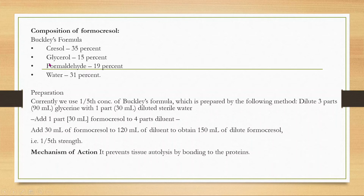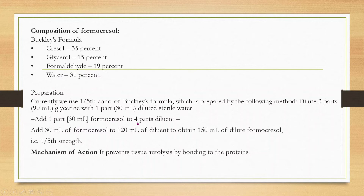The composition of formocresol, also known as Buckley's formula: cresol 35%, glycerol 15%, formaldehyde 19%, and water 31%. Its preparation uses one-fifth concentration of Buckley's formula, prepared by diluting three parts of glycerin and one part of water — that is 90 ml and 30 ml — then adding one part of formocresol to four parts diluent. So 30 ml of formocresol is added to 120 ml of diluent to obtain 150 ml of formocresol solution.